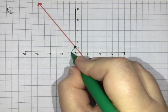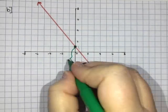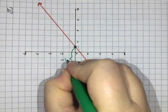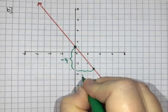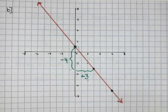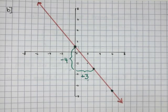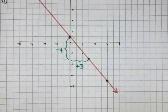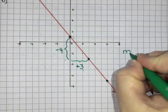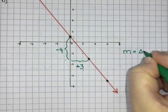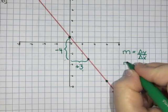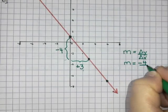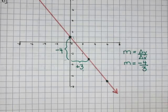So we went down 4. We subtracted 4 from y and we went over 3. We added 3 to our x. So that means that my slope which is delta y over delta x should be minus 4 divided by 3.